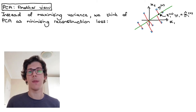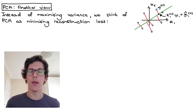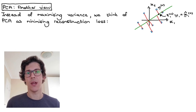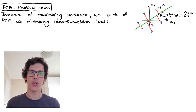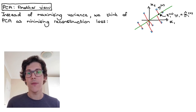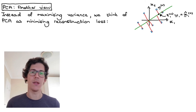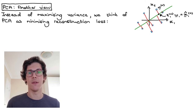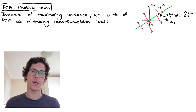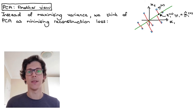In an earlier video I explained that there's actually more than one way of looking at what PCA does. In the last video we took the variance maximization view, where PCA is seen as doing a projection where we try to maximize the variance in the projected space. Another view is that PCA actually minimizes the reconstruction loss, and that's what we'll look at in this video. I will show that the solution is exactly the same as the one we obtained when we tried to maximize the variance.